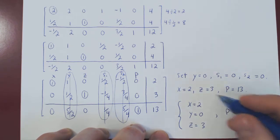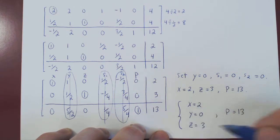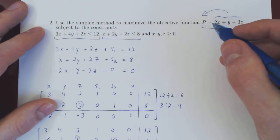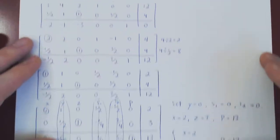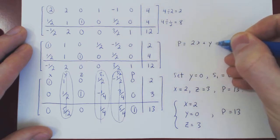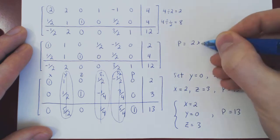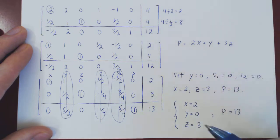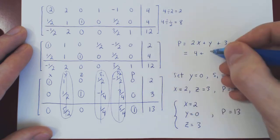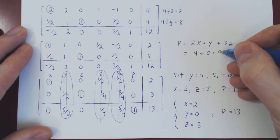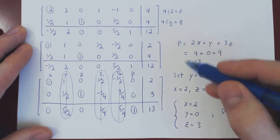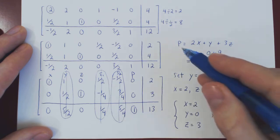We can do a quick check to verify these values are consistent with p equals 13. The objective function was 2x plus y plus 3z. Substituting our values: 2 times 2 is 4, plus 0, plus 3 times 3 is 9, and 9 plus 4 is 13. This confirms the result is consistent with the objective function.